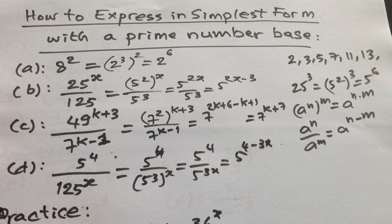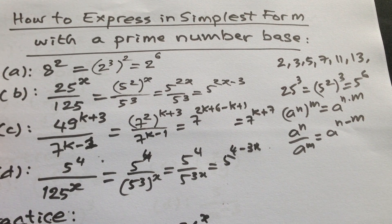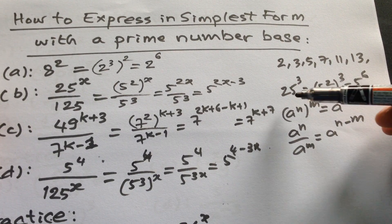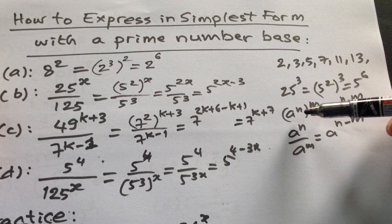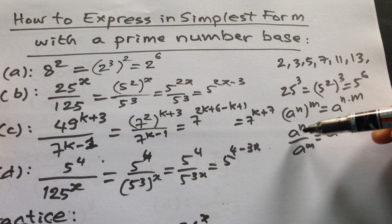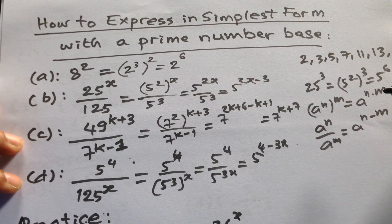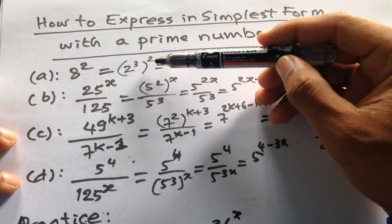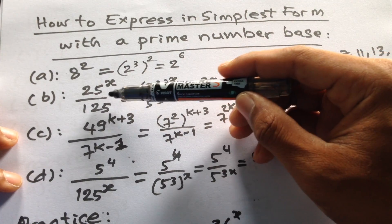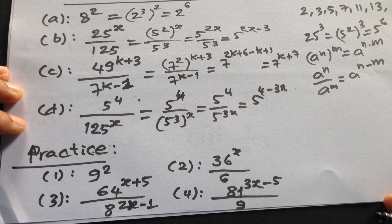So we have the simplified form using the formulas. The key formulas are: a to the power m to the power n equals a to the power m times n, and a to the power n divided by a to the power m equals a to the power n minus m. For example, 2 cubed to the power 2 equals 2 to the power 6, and 25 becomes 5 squared. Now we have practice problems for you.